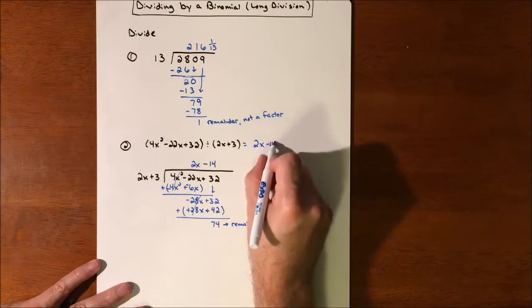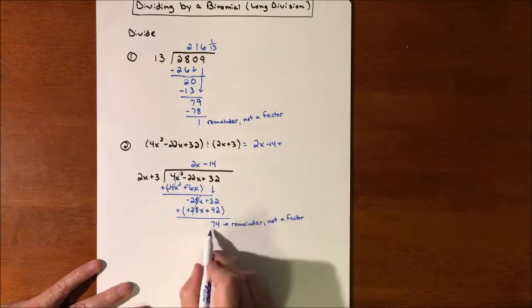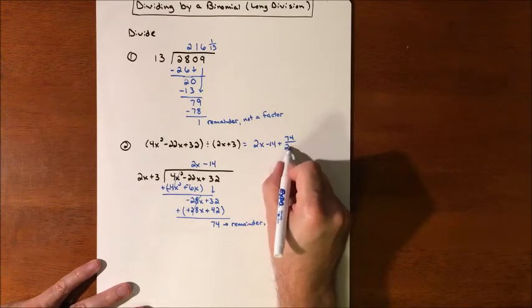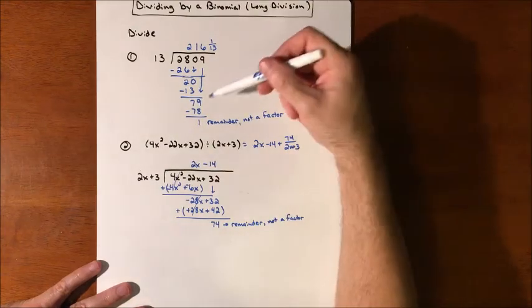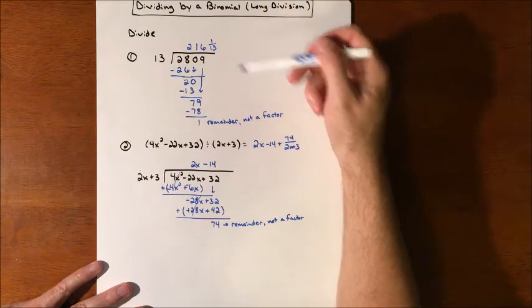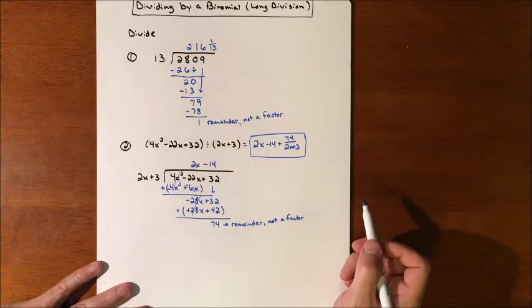2x minus 14 plus, since they're all separate terms, plus our remainder over what we were dividing by, which is exactly the same idea as our remainder over what we were dividing by.